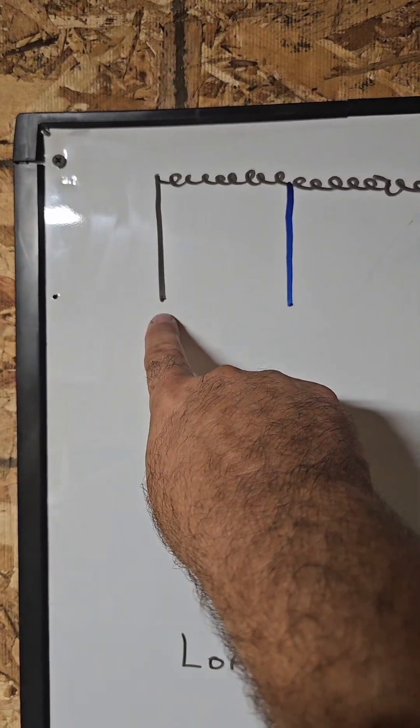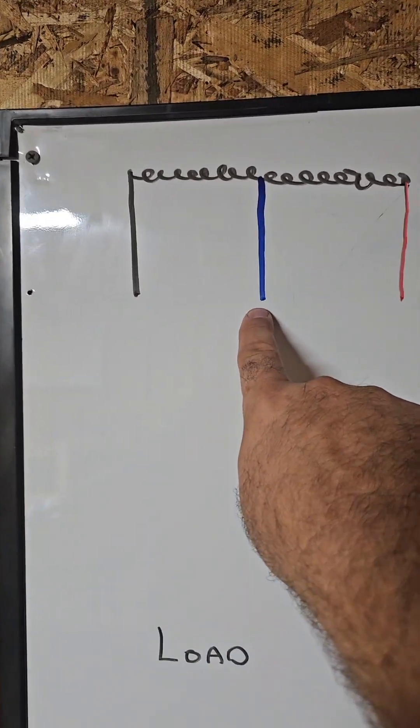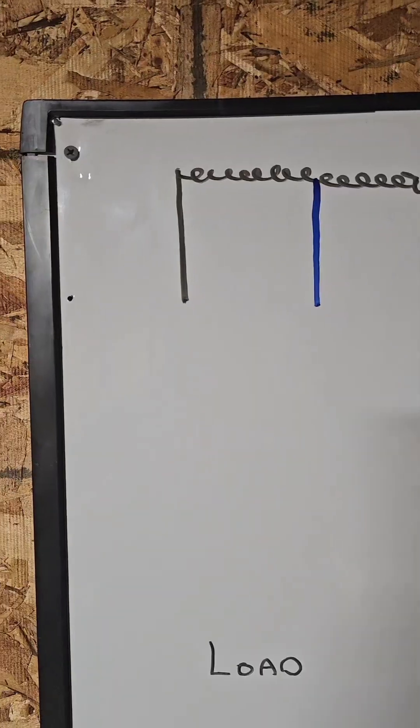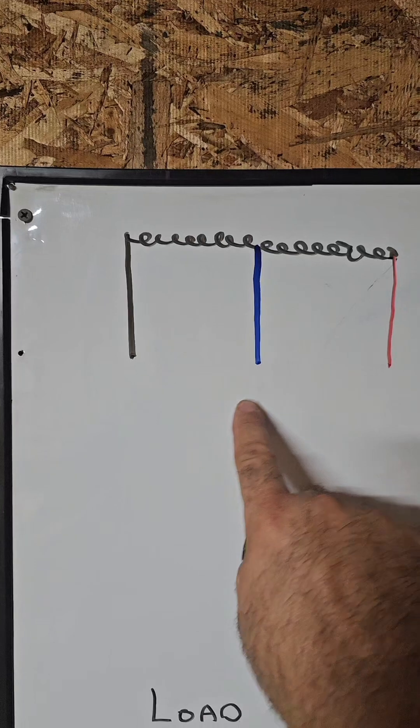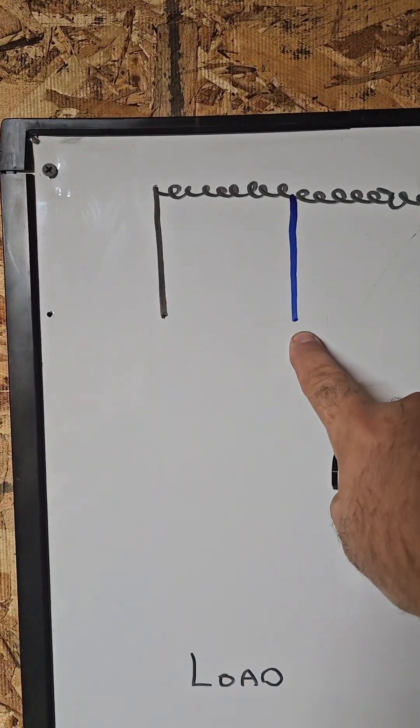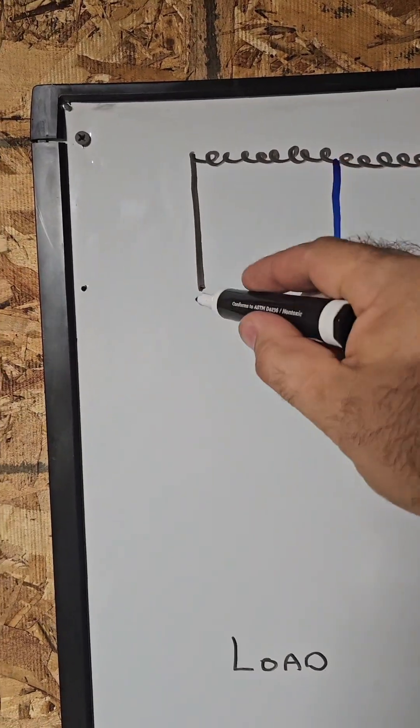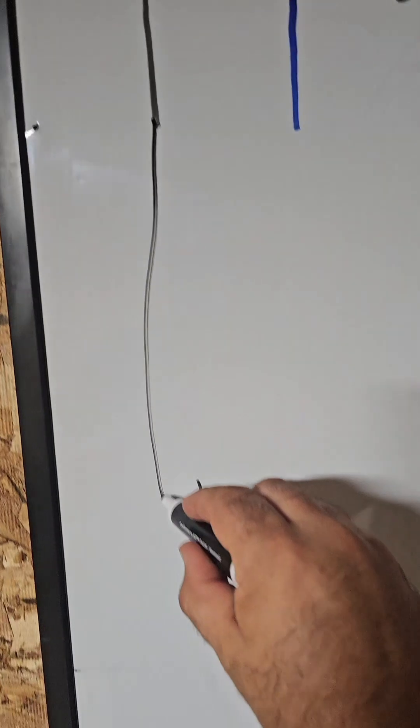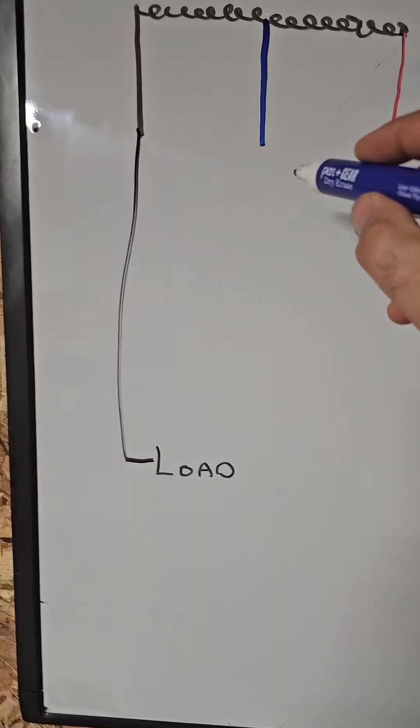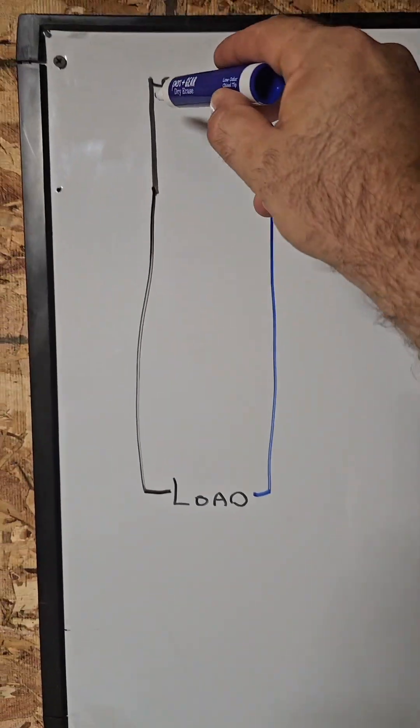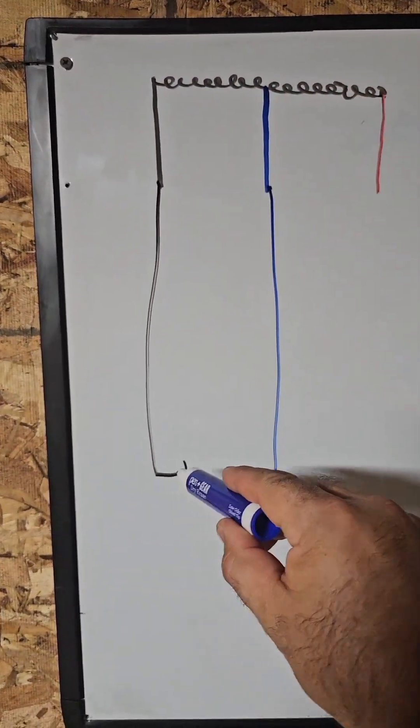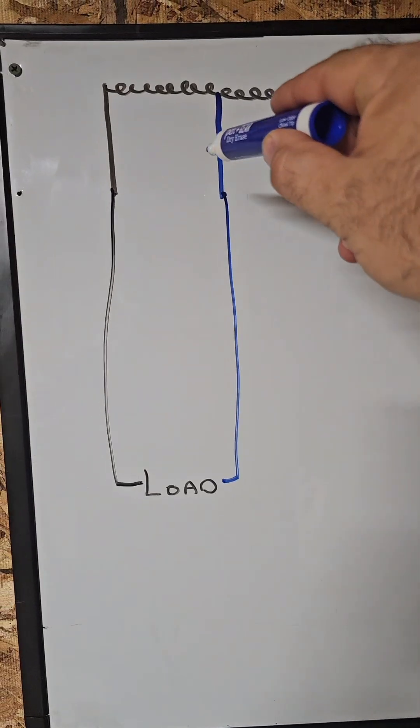The electricity is trying to balance itself back out from here to either one of these connections. The lower the resistance is between one of these connections and the other, the more the electricity will flow. So if instead of running a wire straight to here, which would be an immense amount of electricity, which would be a short circuit, a bunch of sparking, we bring a hot wire to this side of a load and then to this side of the load. And it tries to balance itself out through the load, which provides resistance.